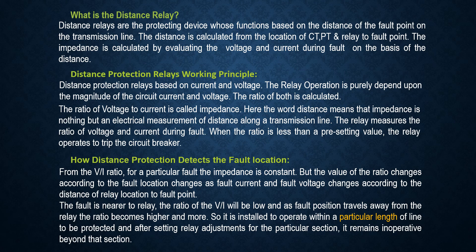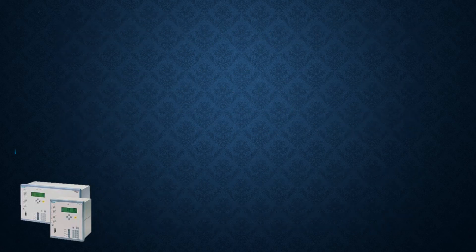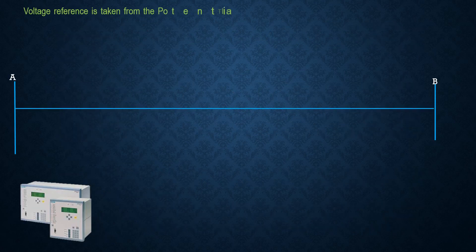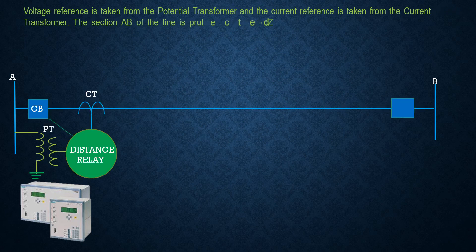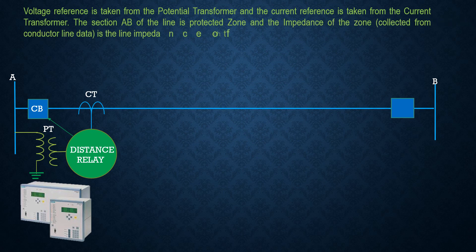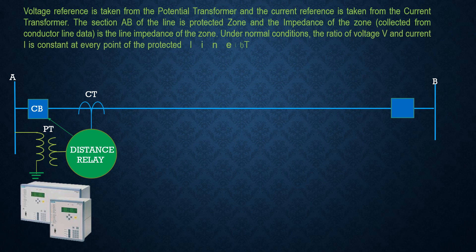The relay is installed to operate within a particular length of line to be protected. After setting relay adjustments for a particular section, it remains inoperative beyond that section. Voltage reference is taken from the potential transformer and current is taken from the current transformer. The section AB of the line is the protected zone, and the impedance is collected from conductor line data.